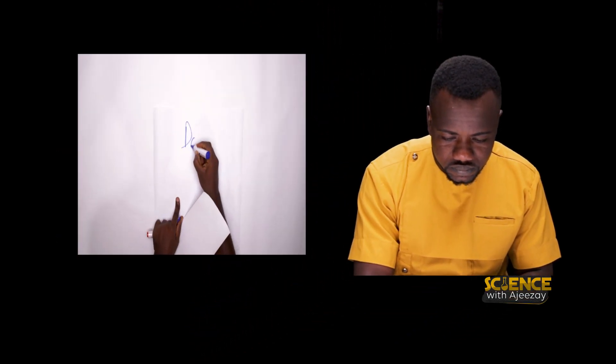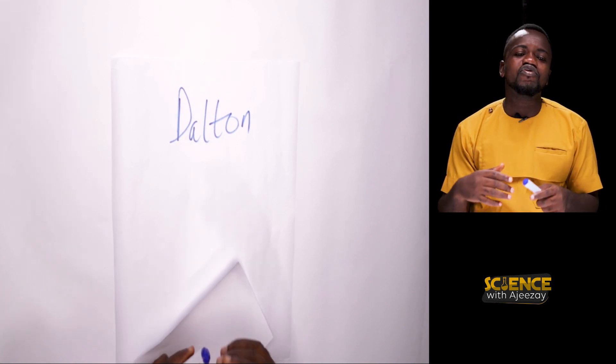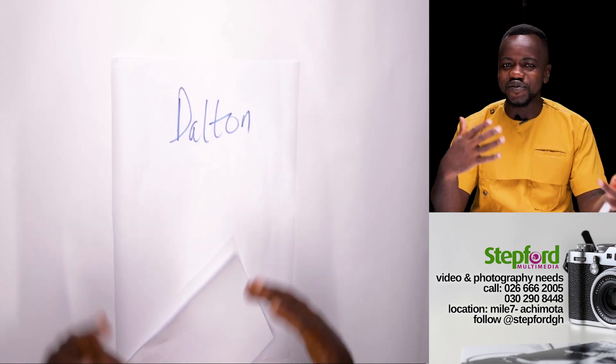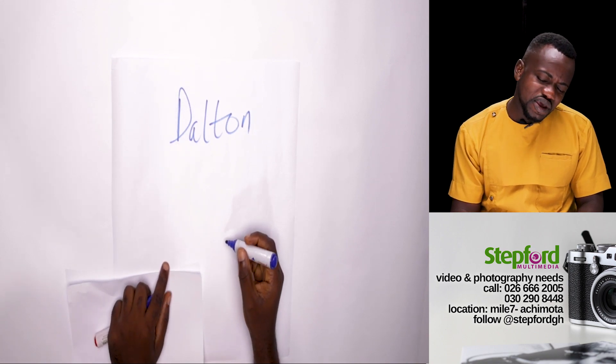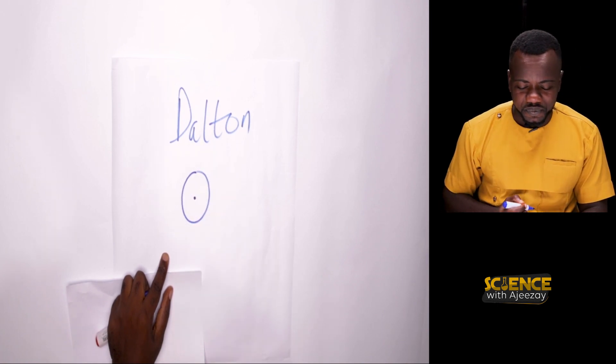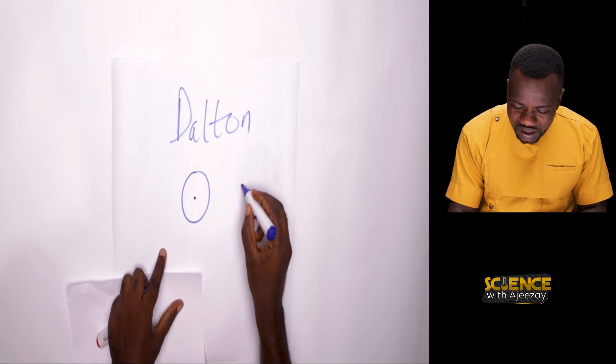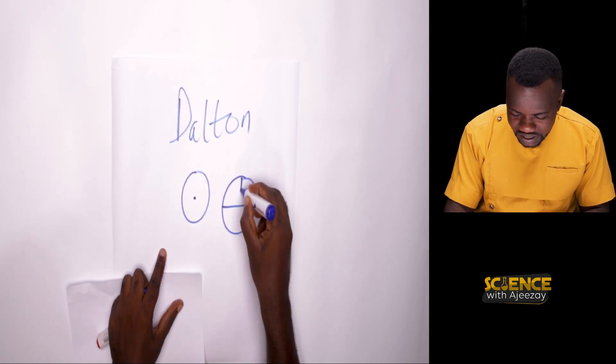So the first two scientists that really played a role, we had Dalton. And Dalton helped to represent the symbols of the element. He used diagrams. So in Dalton's way, we had hydrogen as this and then this. We had sulfur as a big zero with this and then this.